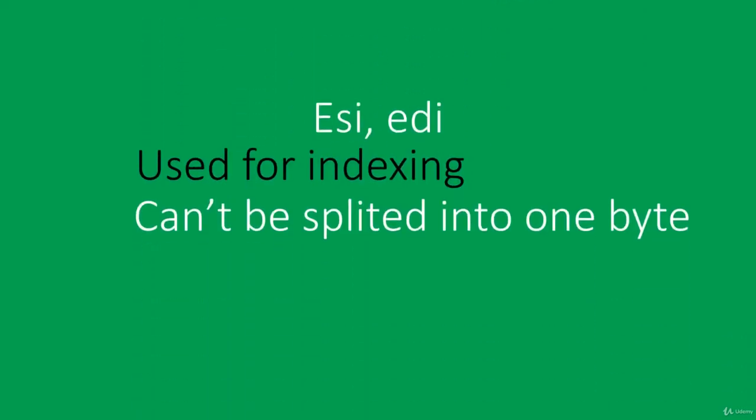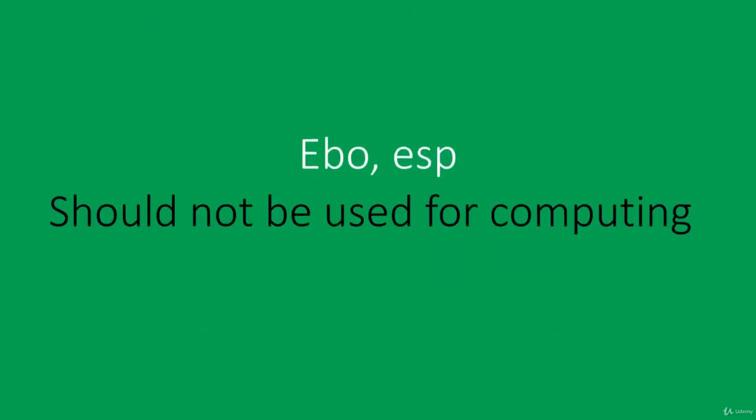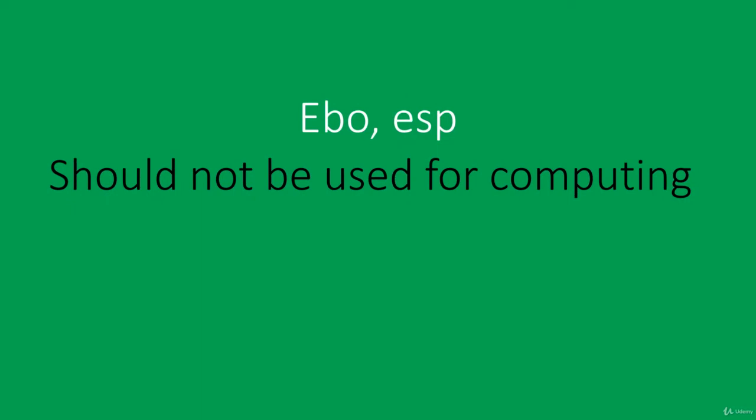Other two registers that we can use are ESI and EDI. These registers used to be used for indexing — SI stands for source index and DI for destination index. We can also access the lower two bytes of these registers by removing the E letter, but we cannot split these registers into bytes like AL or AH. This is not possible with these two.